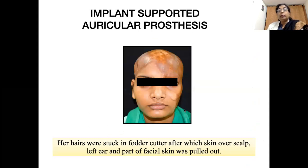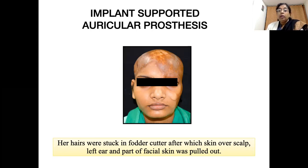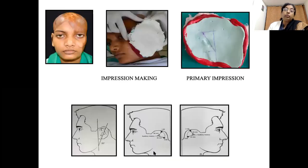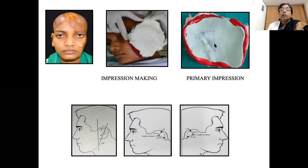I will now explain with the help of cases from our department. This young girl had her hair struck in a folder cutter, so her skin and auricle were pulled out. Surgical reconstruction was not possible due to contracture of the skin, so the patient was taken up for prosthetic reconstruction. We first took an impression to make a diagnostic model over which we made a radio-opaque ear, and placed marks to position the implant to retain the prosthesis.